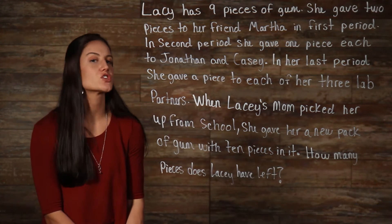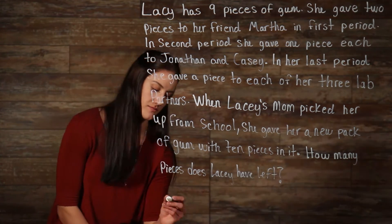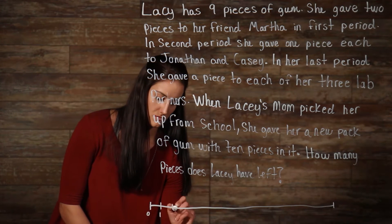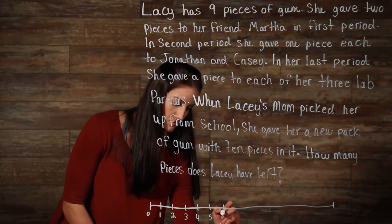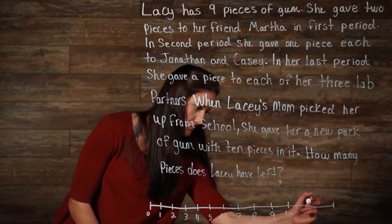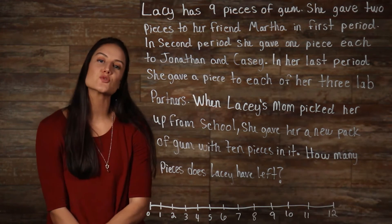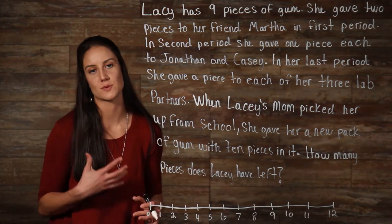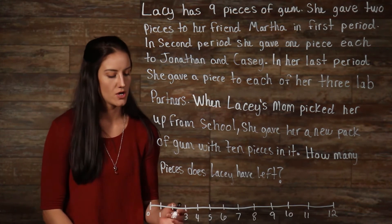Alright, so let's first start by drawing our number line. Now let's read back through our problem and follow what happens with the gum on our number line.